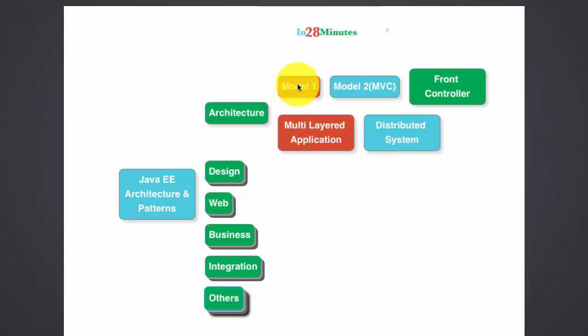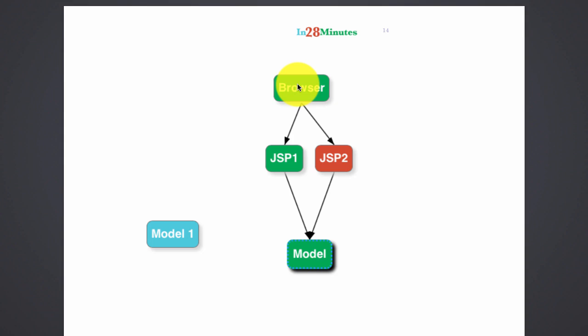Let's now discuss the Model 1 architecture of Java EE. Model 1 is a historical architecture that was used when Java EE first came in and we started developing web applications with Java. That's when we used the Model 1 architecture.